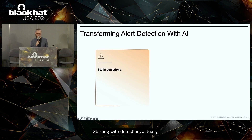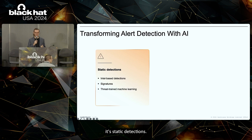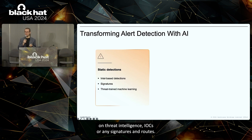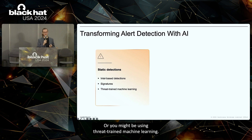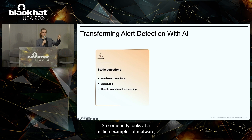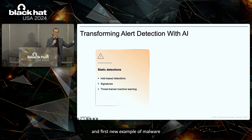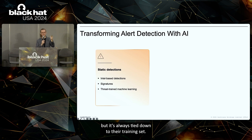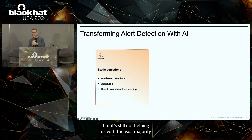Starting with detection — this is what most people use, or most detection engines are built on: static detections. That could mean basing your detections on threat intelligence, IOCs, or signatures and rules. Or you might be using threat-trained machine learning. Everybody and their grandmother is using machine learning and AI these days, but mostly it's supervised machine learning on historic threats — somebody looks at a million examples of malware so they can find the million and first new example. But it's always tied down to that training set, so it's better than static signatures, but it's still not helping us with the vast majority of novel threats.